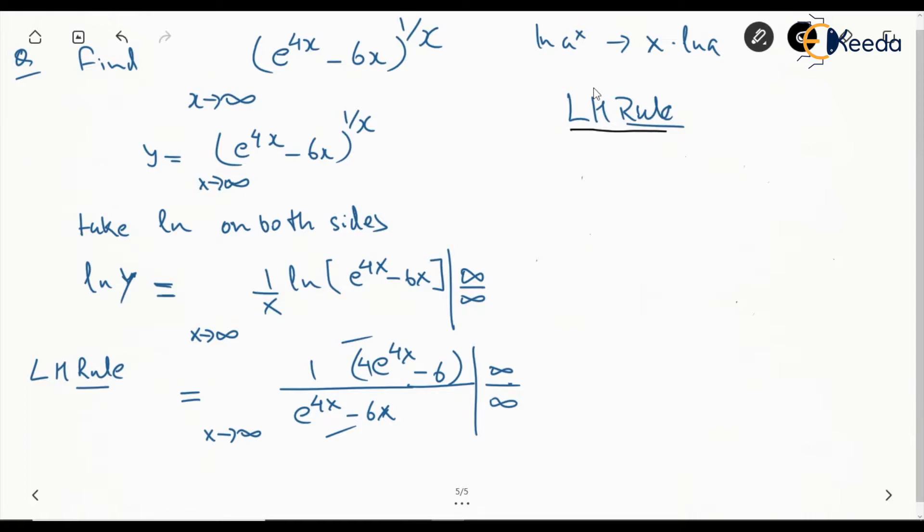The numerator will give 4 times 4 times e to the power 4x, and the denominator will have 4 times e to the power 4x. Minus 6x will become minus 6 for x tends to infinity.